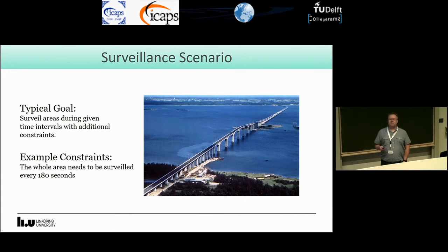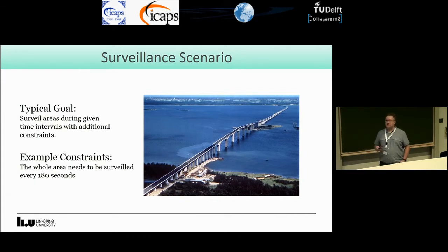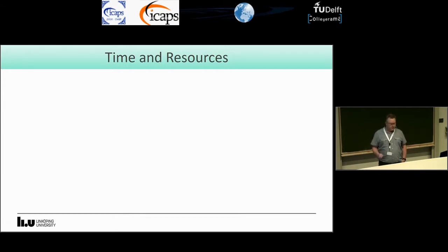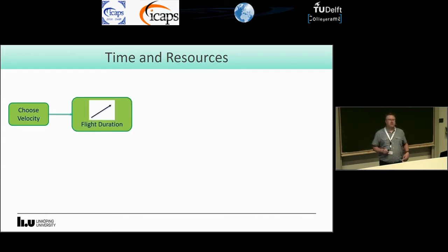Typically we also have extra constraints. In this case the whole area needs to be surveilled every 180 seconds to make sure no one sneaks across the bridge. So if you plan in this type of scenario you need to reason with time and resources. Suppose we have a fly action and we want the planner to choose a velocity for this action.